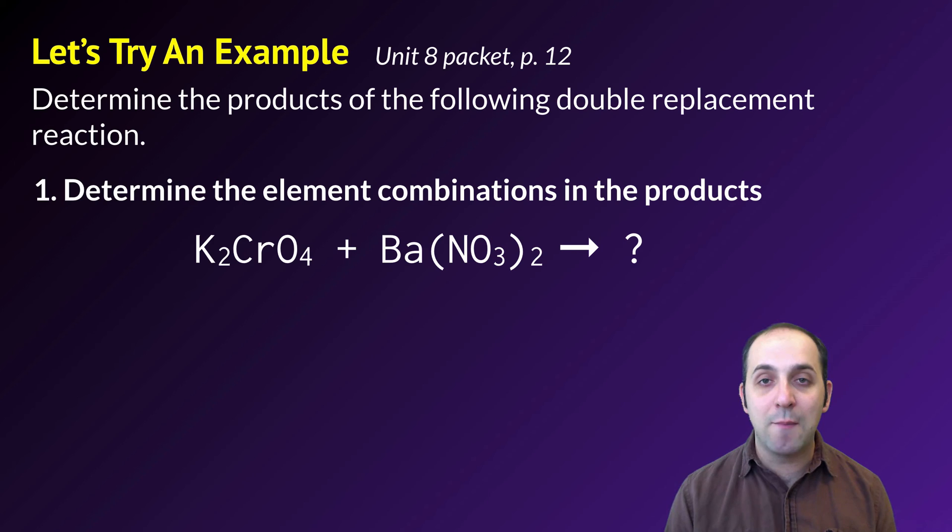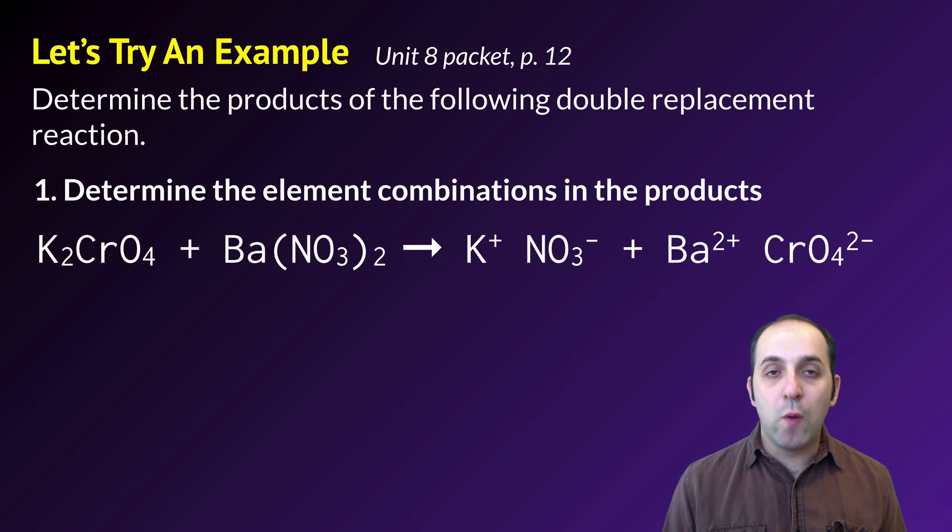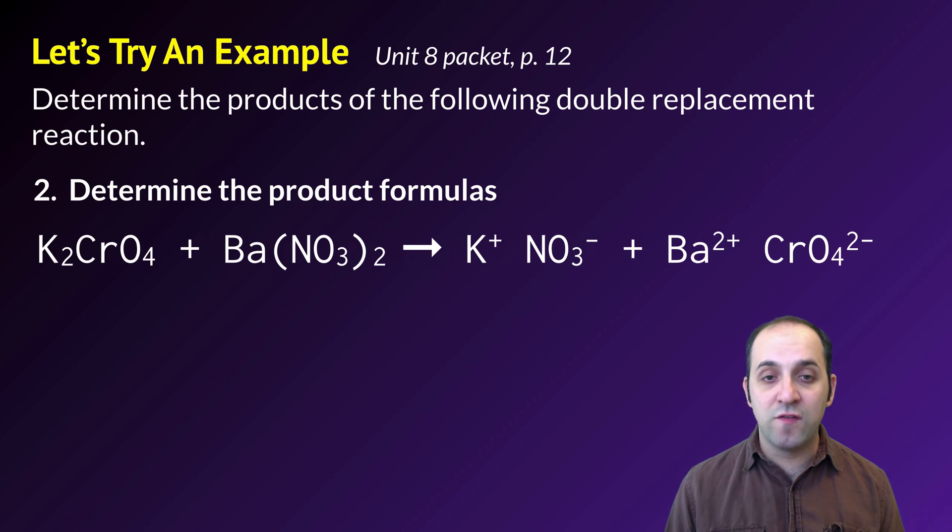So I'm just going to work through the steps that we just talked about. In the first step, I need to figure out the element combinations in the products. We know that my ions are K⁺, and CrO₄²⁻, and Ba²⁺, and NO₃⁻. So when I put them together, I'm going to wind up with K⁺ being combined with NO₃⁻, and Ba²⁺ being combined with CrO₄²⁻.